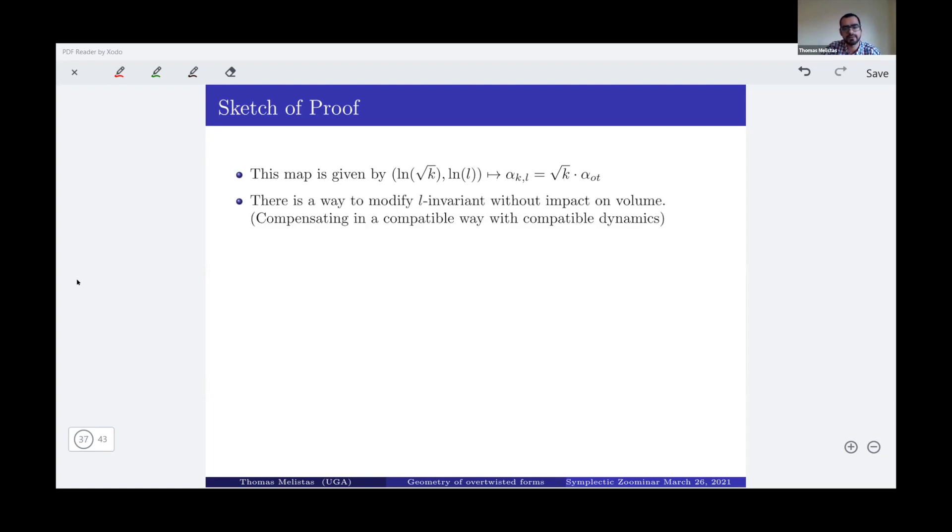So what we need in order to have this embedding is a map mapping the point ln of square root of k and ln of L to a form alpha_{k,L} with volume being k and L invariant being L or something which is closely related to L. This map is given by that. So this is my preliminary modification and I can arrange for my preliminary modification of volume 1, for example, so I can make the volume k. Now, there is a way to modify the L invariant without impact on volume. So how do you do that? You just play with your second function inside this large twist tube, but doing that has an obvious effect. So what you need to do is to compensate for the volume without introducing low action orbits, because I really work with the lowest action orbit here. So if I change volume somewhere at some other point of my manifold without introducing low action orbit, that doesn't affect my computation. But changing the volume changes the L invariant. And for the L invariant, we really have to use a triangle inequality.